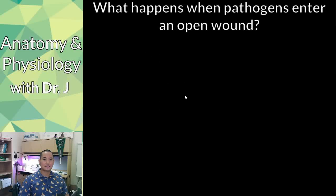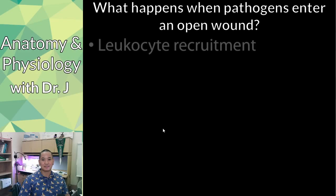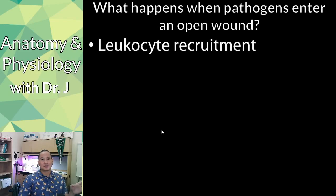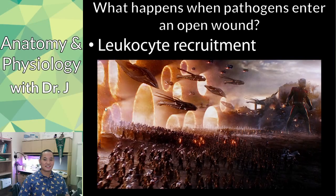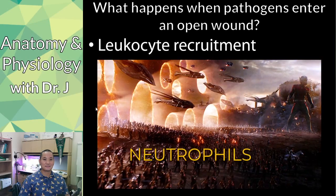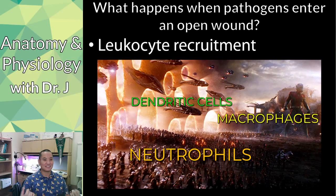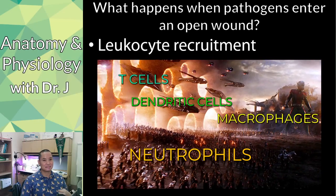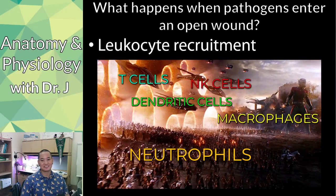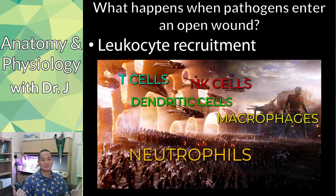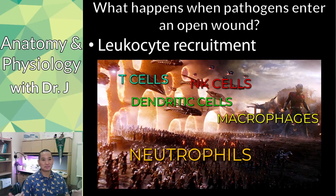So what happens — how does your body react? Say bacteria do enter your tissue somehow. What happens is that your body sends in the troops. It sends in the leukocytes, your white blood cells, and it tries to combat it. You have all these types of white blood cells, and this is how your body tries to react to some sort of infection.